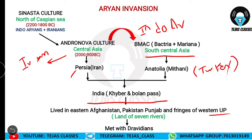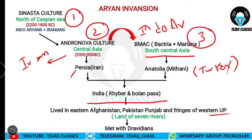We will see step by step how they did that. This is how the Aryans invaded India: first Sintashta culture, second Andronova, third BMAC, then Persia, then India. They settled in Eastern Afghanistan, Pakistan, Punjab, and fringes of Western UP. This land of seven rivers, Sapta Sindhu, is very important.